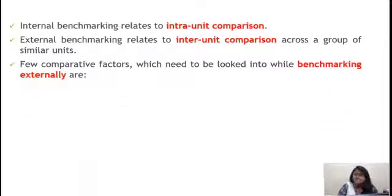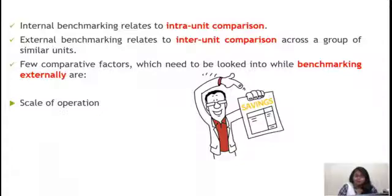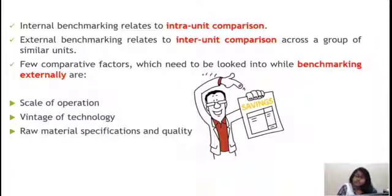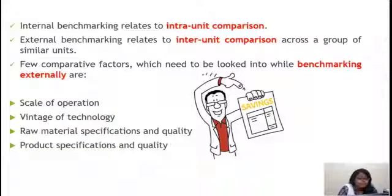Now if we are externally benchmarking, we have to consider some factors. We cannot compare a textile industry with a power plant. If we are in textile industry in India, we should not compare with a textile industry in Africa. We will compare with similar scale of operations. Second, vintage of technology should be similar—we cannot compare brand new technology with outdated technology, as there will be a difference in energy consumption. We should compare with industries similar to us. Then raw material specifications and quality, and product specifications and quality. These four factors you have to consider when doing external benchmarking.